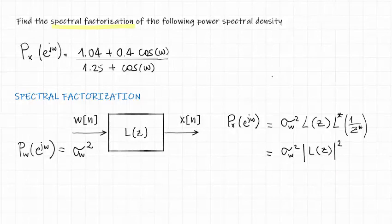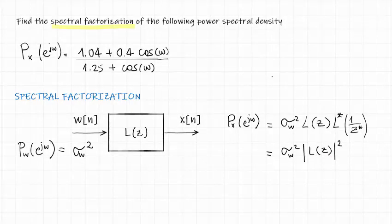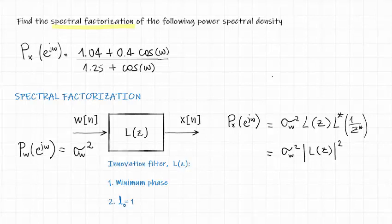So, in order to find the spectral factorization, we need to make additional constraints on L, which is also known as the innovation filter. The first constraint is that the system is minimum phase. Moreover, in order to avoid any ambiguity in the scaling factor, we also constrain the first coefficient of the filter to be equal to 1.